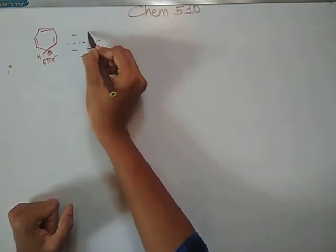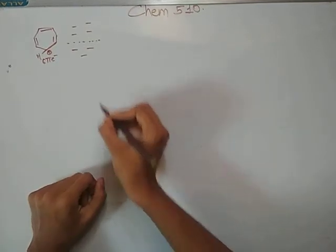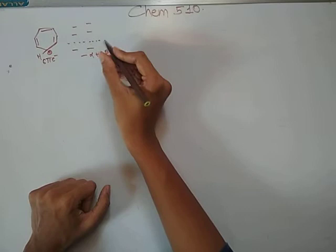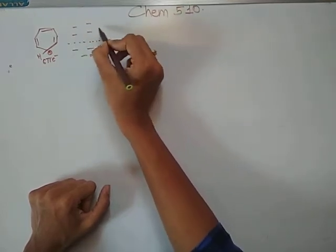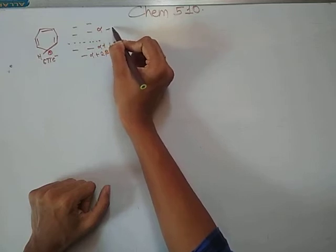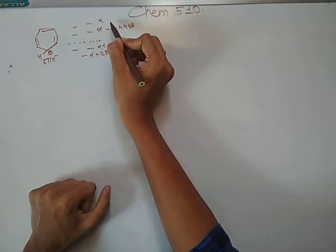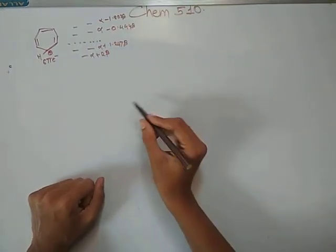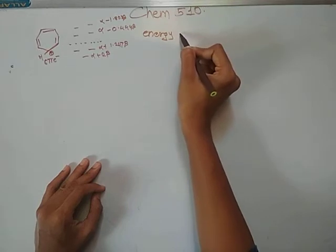The bonding, non-bonding, and anti-bonding orbitals can be calculated by Frost and Musulin's method. The energies of the orbitals are: first is alpha plus 2 beta, then alpha plus 1.247 beta for the second and third, then alpha minus 0.444 beta for the fourth and sixth, and alpha minus 1.808 beta for the delocalized resistance.